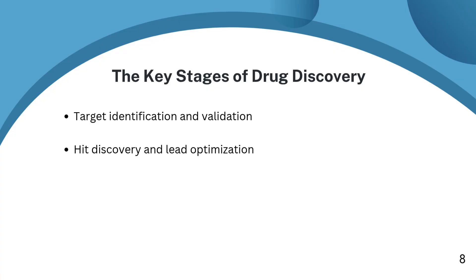The second stage is hit discovery and lead optimization. Using technologies like high-throughput screening or AI-driven simulations, researchers test thousands, sometimes millions, of compounds. The hits that show promise are refined into leads, which are further modified to improve potency, safety, and bioavailability.